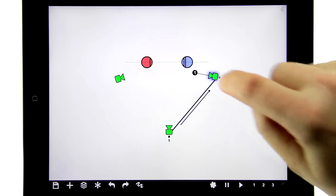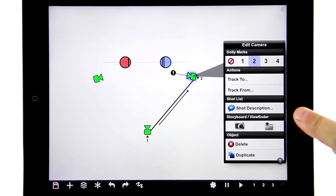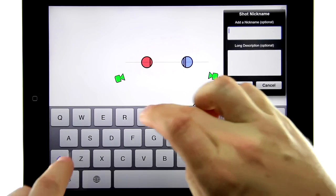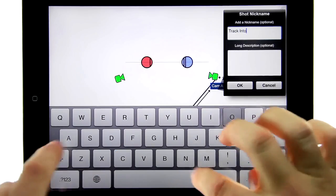Instead you describe shots with a super duper label called a shot description that you'll find in the camera menu, and I'll add one now. Let's give it a quick name like 'track into OTS'.